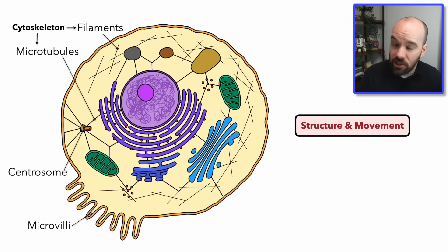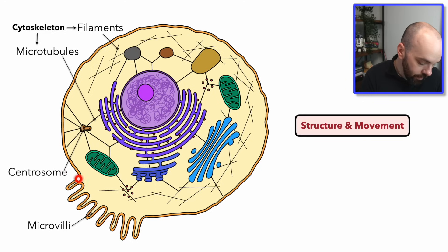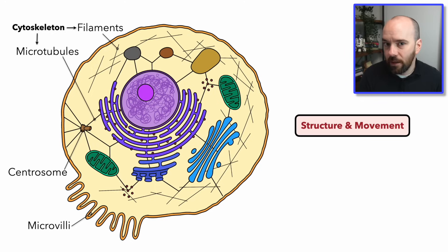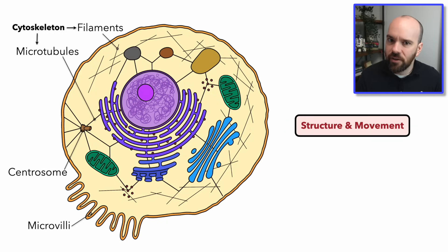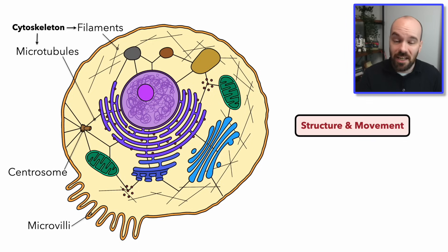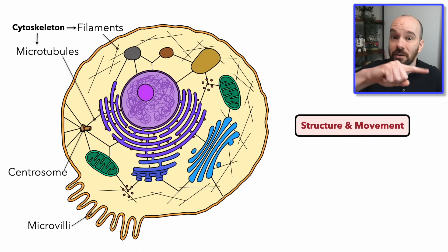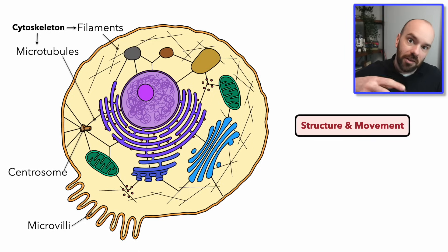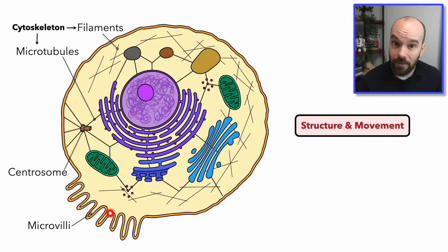Some cells have structures called microvilli — foldings on the cell membrane. The purpose of microvilli is to increase the surface area of a cell. Not all cells have these, but an example is the cells in your small intestine. Your small intestine has to absorb molecules that you eat, so we need a bigger surface area to absorb more molecules — those cells are going to have microvilli.